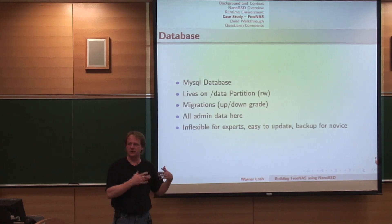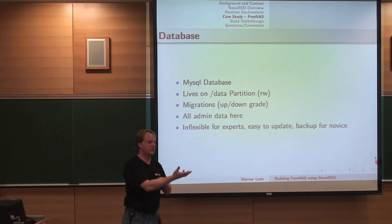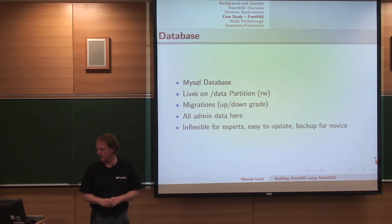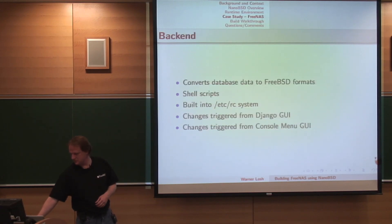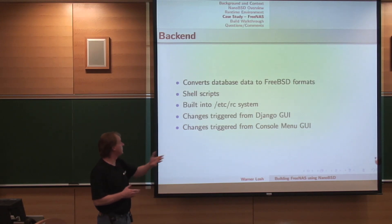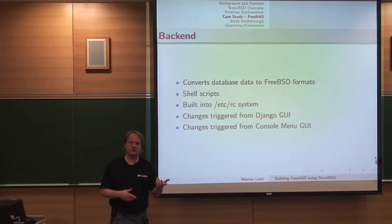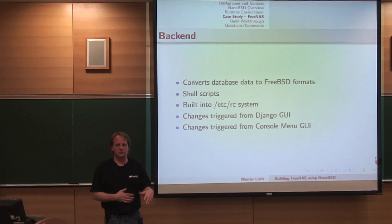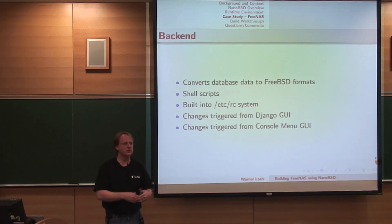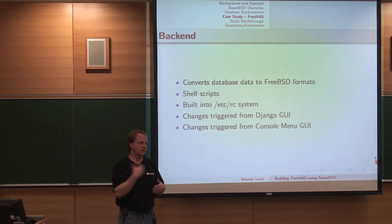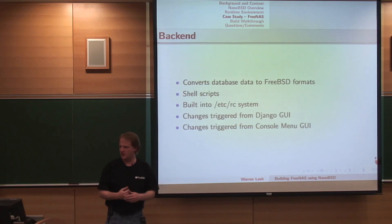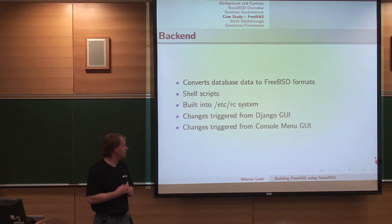For experts that want to tweak things, there has been some feedback that it's not as tweakable as they'd like. There are two things the backend does: one is convert the database tables to configuration files, and the second — in cases where just creating the data file isn't enough to configure the system — is to bolt together the system in various ways. These are done in Python using triggers, so when you do something in the GUI, the trigger fires and everything happens properly behind the scenes. We also have a very limited console GUI that hooks into this, primarily used for setting the IP address of the system.